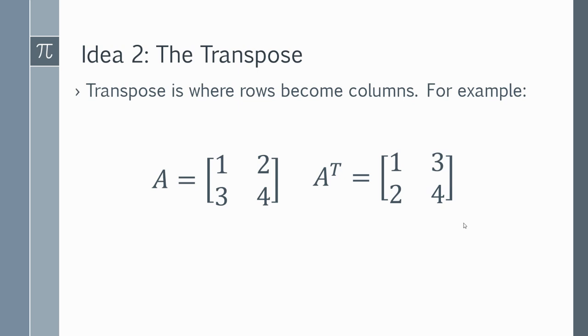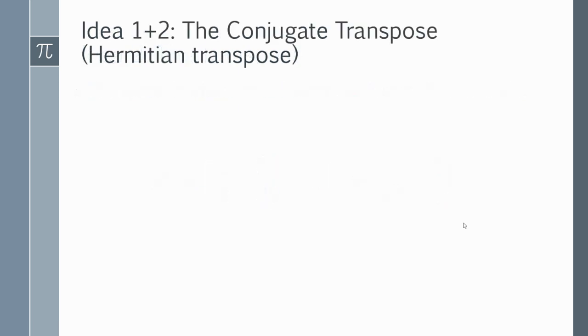Now let's put these two ideas together. And this is where the idea of the Hermitian comes in. So we've got what's called the conjugate transpose, which is also called the Hermitian transpose. So if we had a matrix m, which is defined as one i minus i and then one...